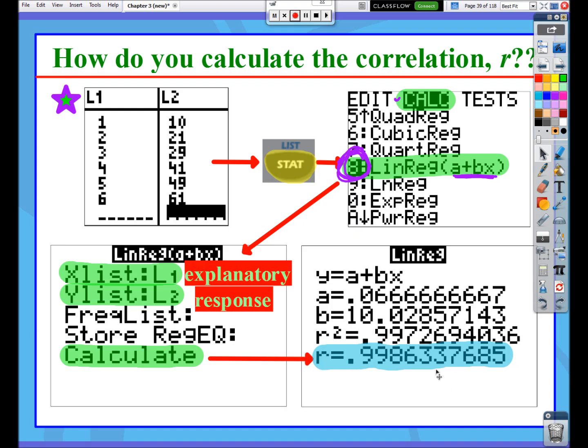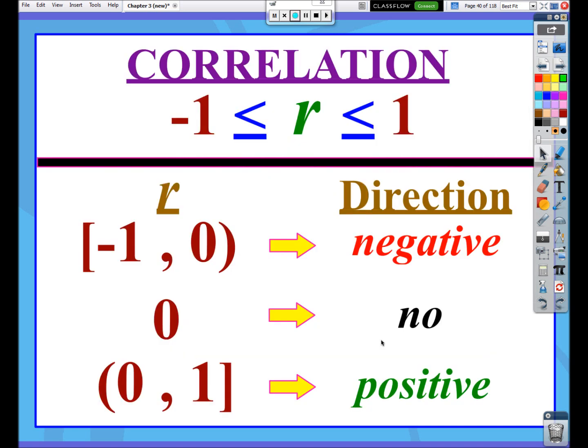So now here's R. This is the correlation. Notice it's positive, which means the direction of our scatterplot should be positive. Now, it also is 0.9986, and we haven't really talked about bounds yet. So let's talk about that.